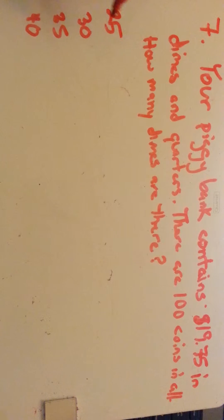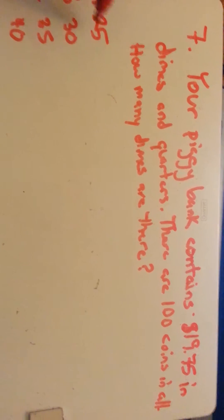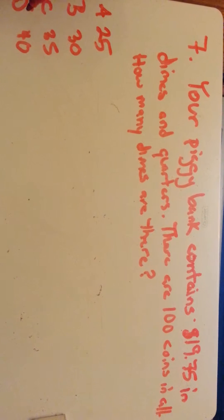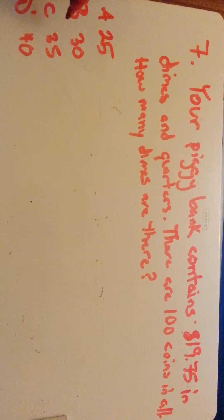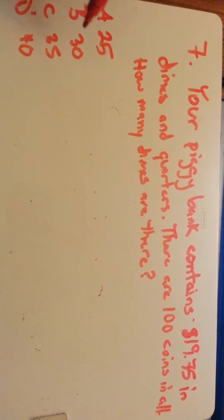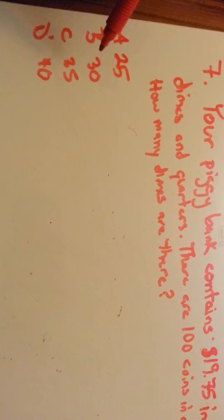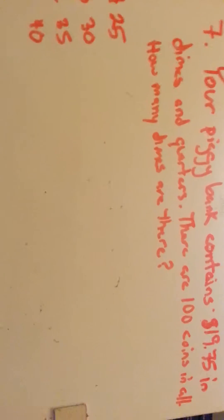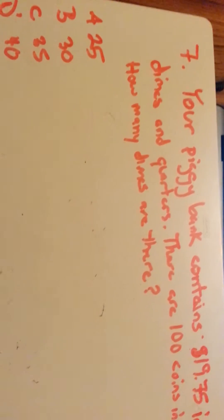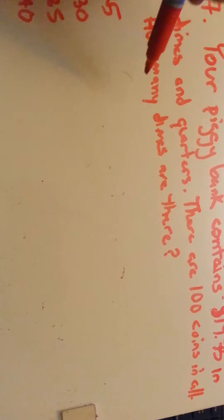So you have two options here. You can either do a guess and test and take these answers over here and try and figure out which one, with the quarters, can equal out to 100 coins and equal $19.75, or you can do like I want to do and set up an algebraic equation and solve for X.